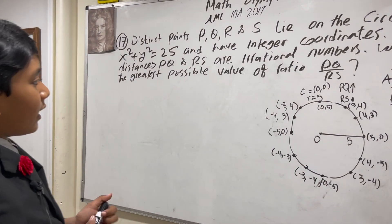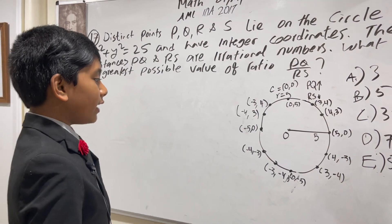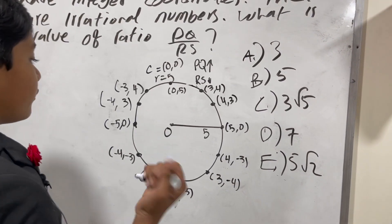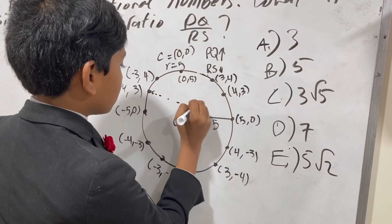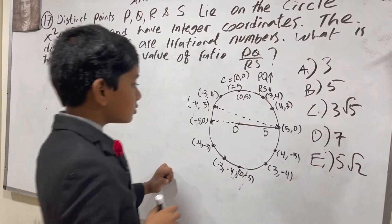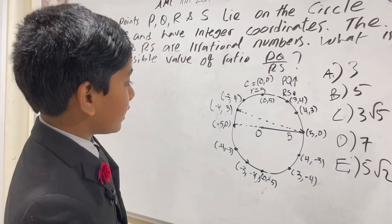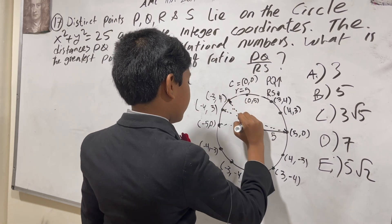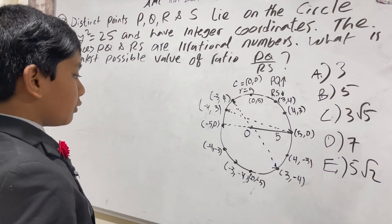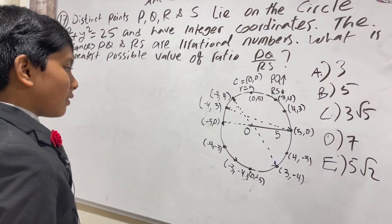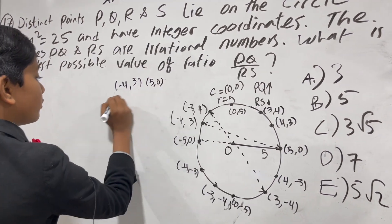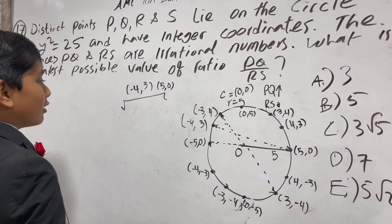So the greatest possible value of ratio PQ to RS. The value that would be the longest for PQ would be something that's close to the diameter. Like for example, something stretching from (-4,3) to (5,0), which is notably close to this diameter. So let's use the distance formula on that one.